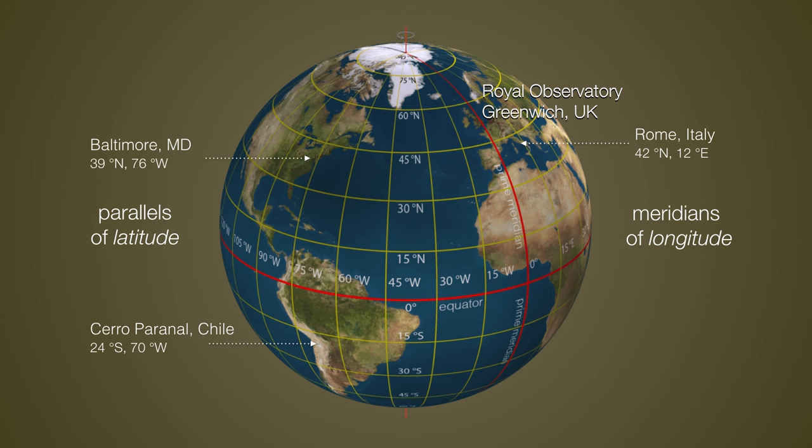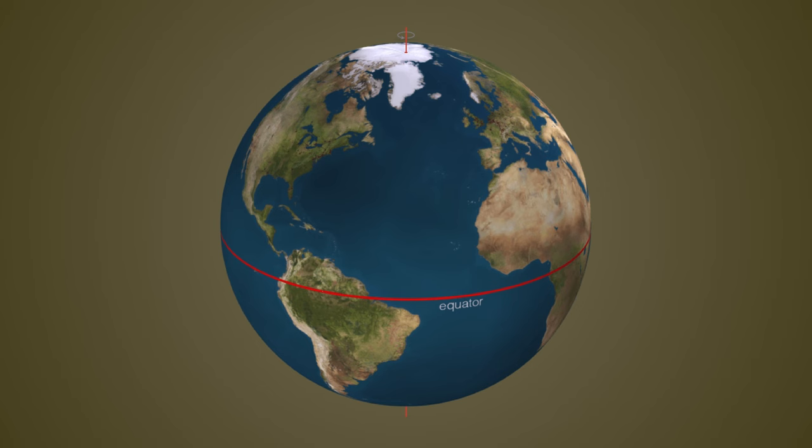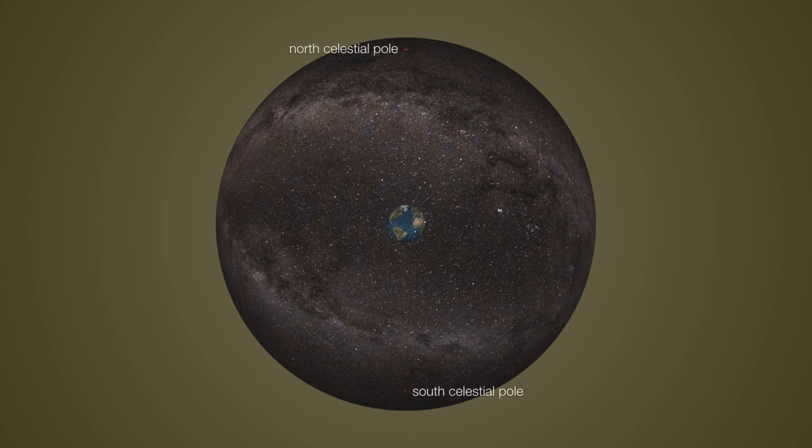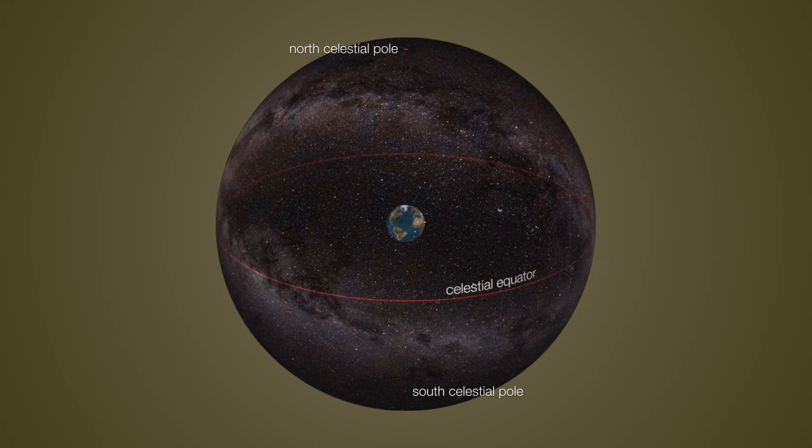Now, that is how we define every location on Earth. And we're going to use an analogous system to define every location in the heavens. So, let's bring our Earth inside of the celestial sphere, and we'll once again extend our north and south poles to form the north and south celestial poles. We'll extend the equator to form the celestial equator.